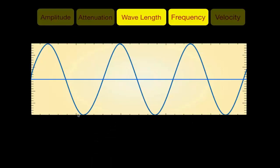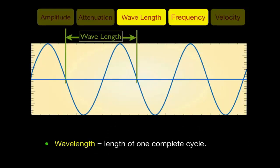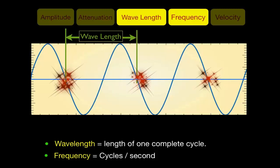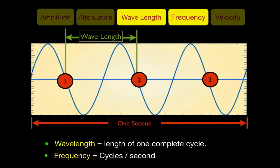Wavelength is the duration of one complete cycle of sound, and frequency means how many cycles we have per one second, expressed in Hertz. One Hertz equals one cycle per second. In this example, we have three cycles in one second, so the frequency equals three Hertz.